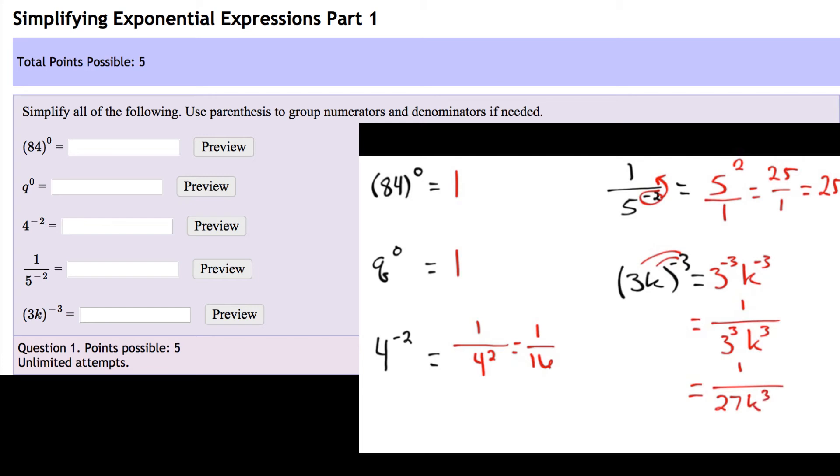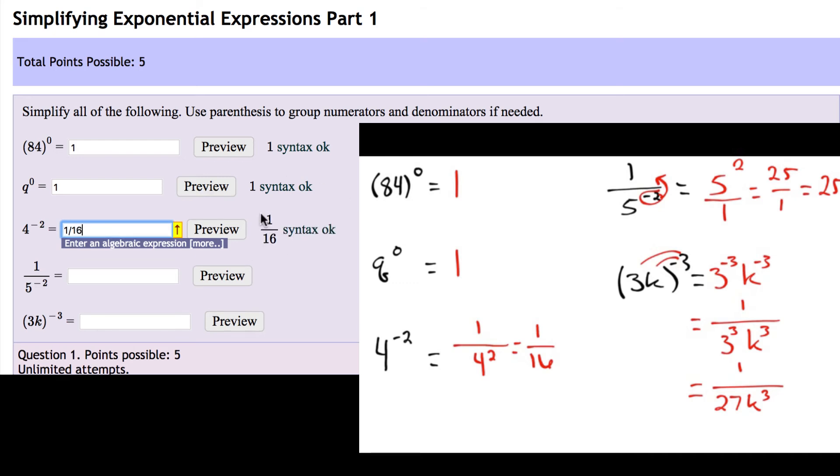Now in our assignment online, it's going to take a little bit of work to type these in. As you can see here, 84 to the power of 0 is just 1. That's easy. Q to the power of 0 is 1. We've got 4 to the negative 2 is 1 over 16. And you can tell in this preview that it's exactly what I want it to look like. 1 over 5 to the power of negative 2 just was 25.